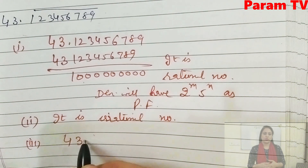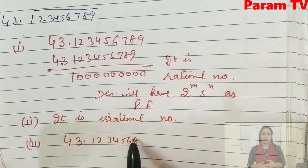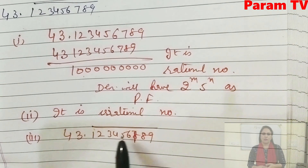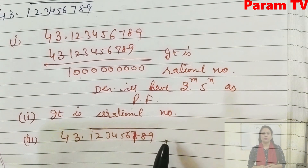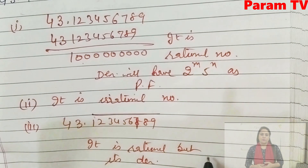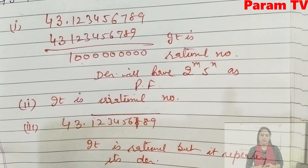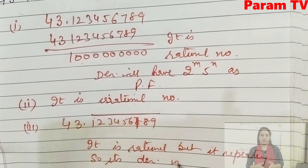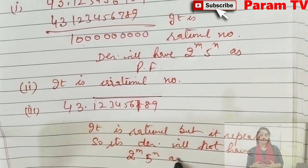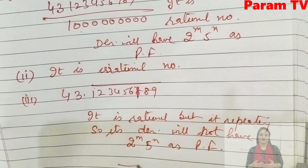The third part is 43.123456789̄ (with a bar on top), meaning these digits repeat. So it is a rational number. But since it is a non-terminating repeating decimal, its denominator will not have 2^m × 5^n as prime factors.